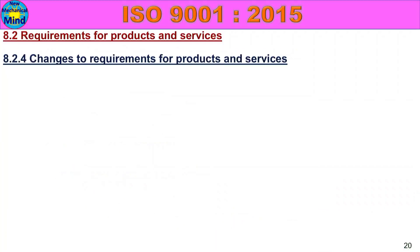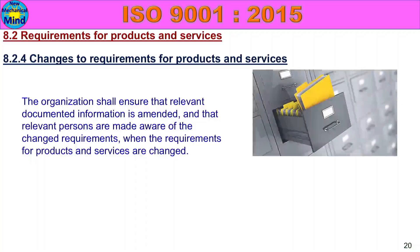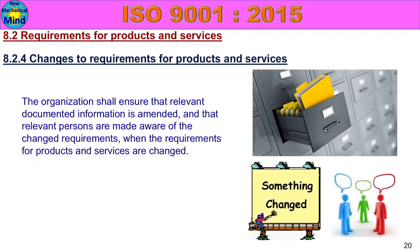8.2.4 Changes to Requirements for Products and Services. The organization shall ensure that relevant documented information is amended and that relevant persons are made aware of the changed requirements when the requirements for products and services are changed. If there are any changes to products or services, the document must be updated accordingly. The changes must be communicated to all relevant people — for example, production operators, quality inspectors, logistics, or purchasing persons. Any department affected by changes must be informed. This completes Class 8.2 Requirements for Products and Services.